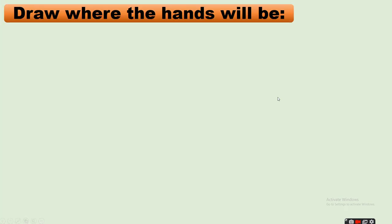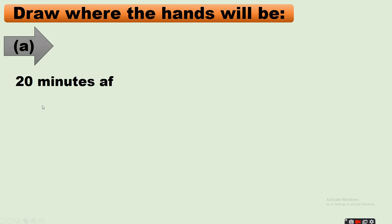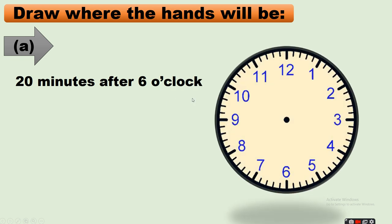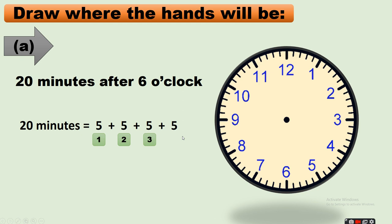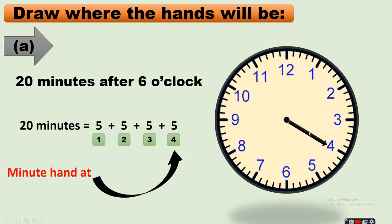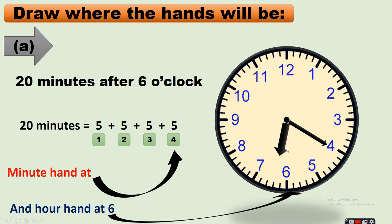Next question: draw where the hands will be 20 minutes after 6 o'clock. 20 minutes equals 5 plus 5 plus 5 plus 5, that means after 12, count 1, 2, 3, 4 — the minute hand shows 4. So we draw the minute hand pointing at 4, and the hour hand points at 6.